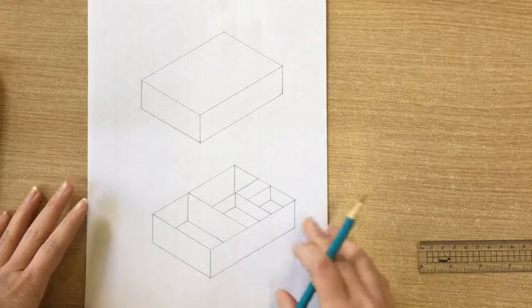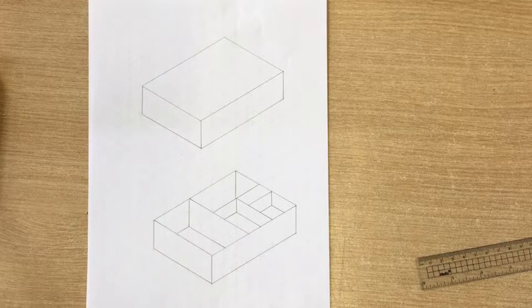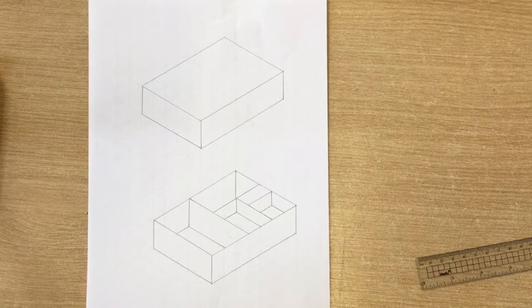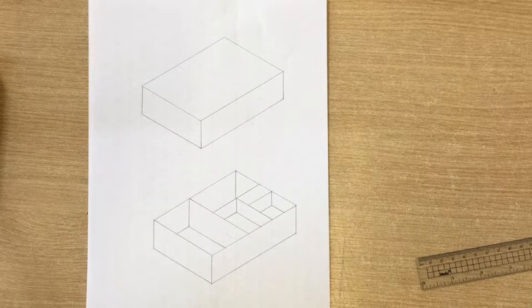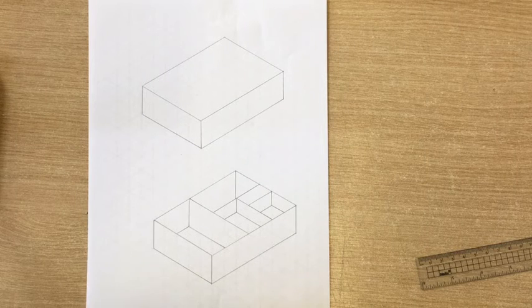Once you have done all that you do need to annotate your designs. So for each design you need to annotate to explain how the packaging will hold each item. So how is it going to hold the board? How is it going to hold the counters, the cards, the dice and the leaflet?